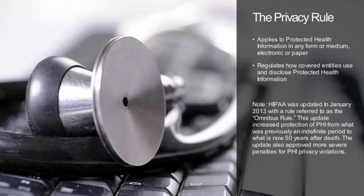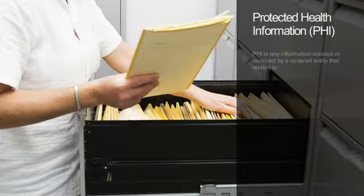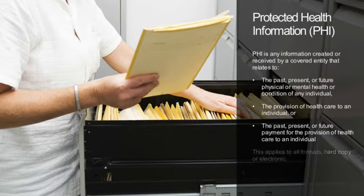What types of health information are protected under the privacy rule? Protected health information, or PHI for short, is any information related to past, present, or future patient health, treatment, or payments. Also remember that this applies to all formats — hard copy or electronic.